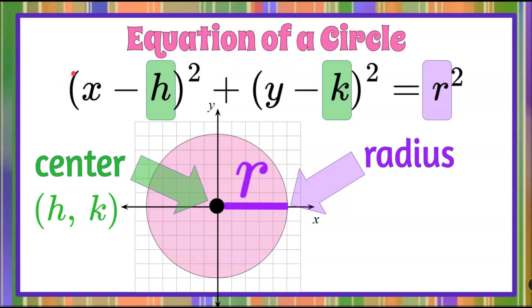When you write the equation, you're going to leave x and y as x and y. It's going to be the equation of the circle in terms of x and y.